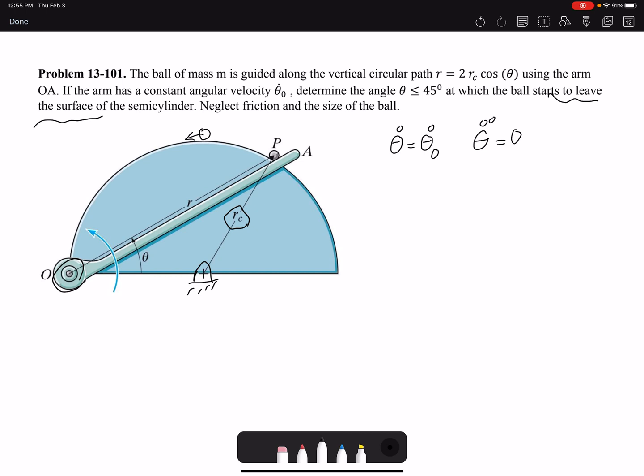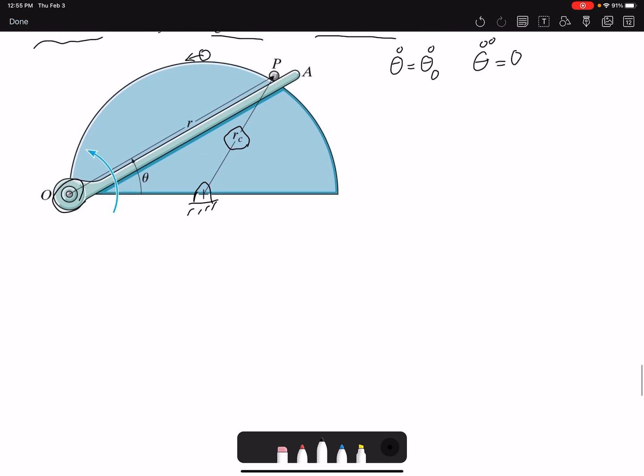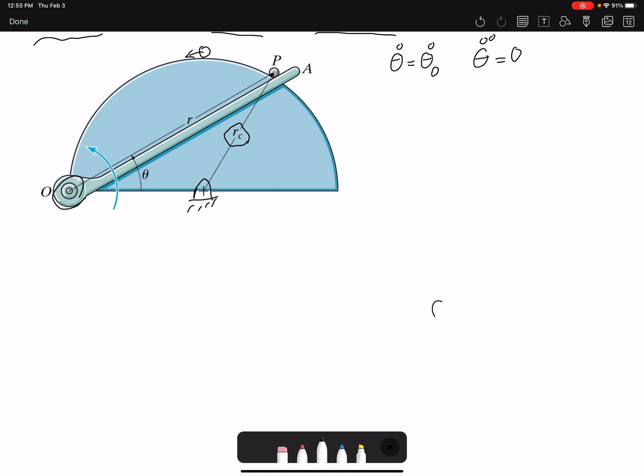Neglect friction on the size of the ball, so there won't be any friction, and we are analyzing the kinetics of a particle. So the first step would be drawing the free body diagram. That would be the R coordinate, that would be theta.